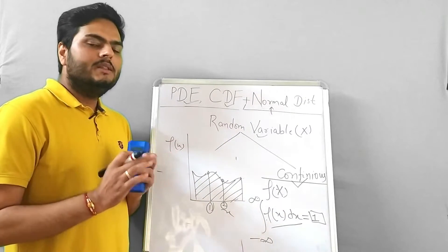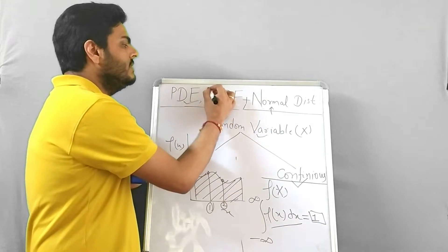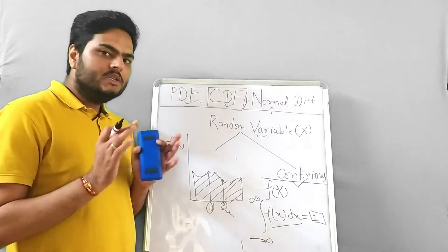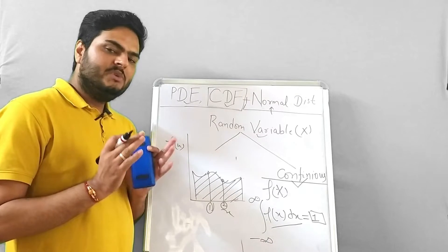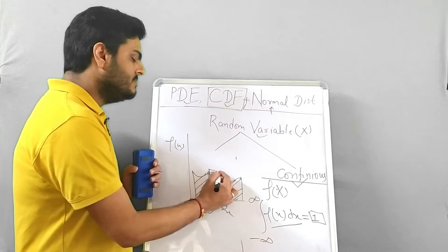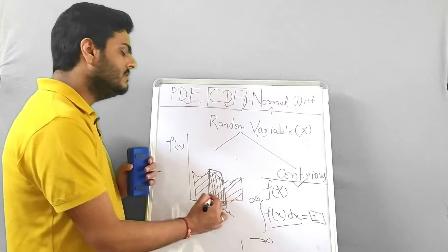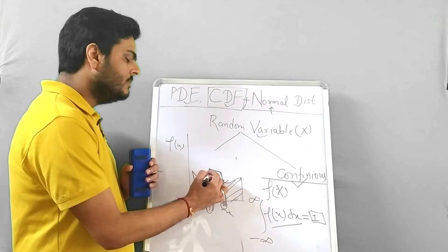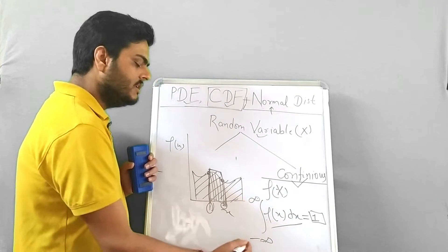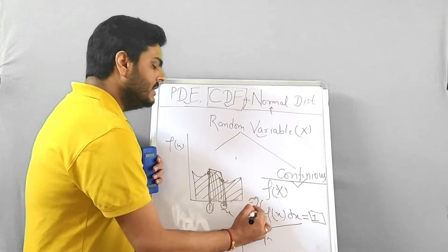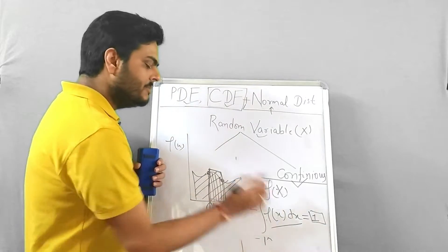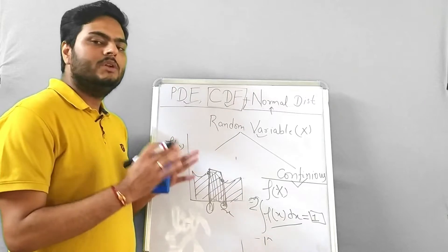Now, what is the cumulative distribution function? In this chart, if I ask you: what is the probability that the random variable is between 1 and 2? We have to take the area under the curve from 1 to 2. So instead of integrating from minus infinity to infinity, we change the limits to 1 to 2, and the result gives a probability — obviously less than 1 — which tells us the probability that the random variable lies between 1 and 2.